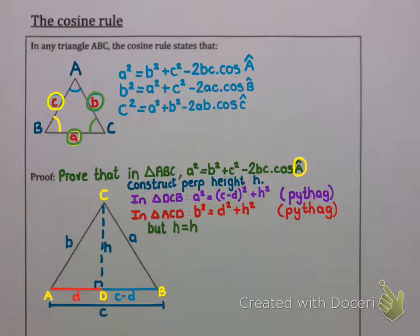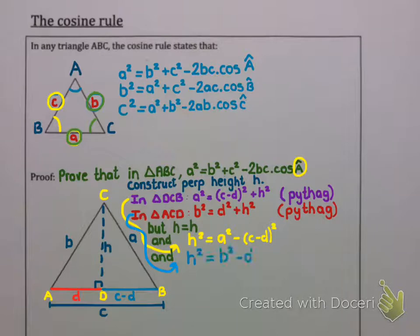But these heights are the same thing. Just as we proved in the sin rule, this is one perpendicular height. So if you have two different formulas for this height, they must be equal. So if we rearrange our first formula, we can get h squared is A squared minus C minus d squared. And if we rearrange the second formula, we can get h squared is B squared minus d squared. But these h's must be equal. So B squared minus d squared must equal A squared minus C minus d squared.